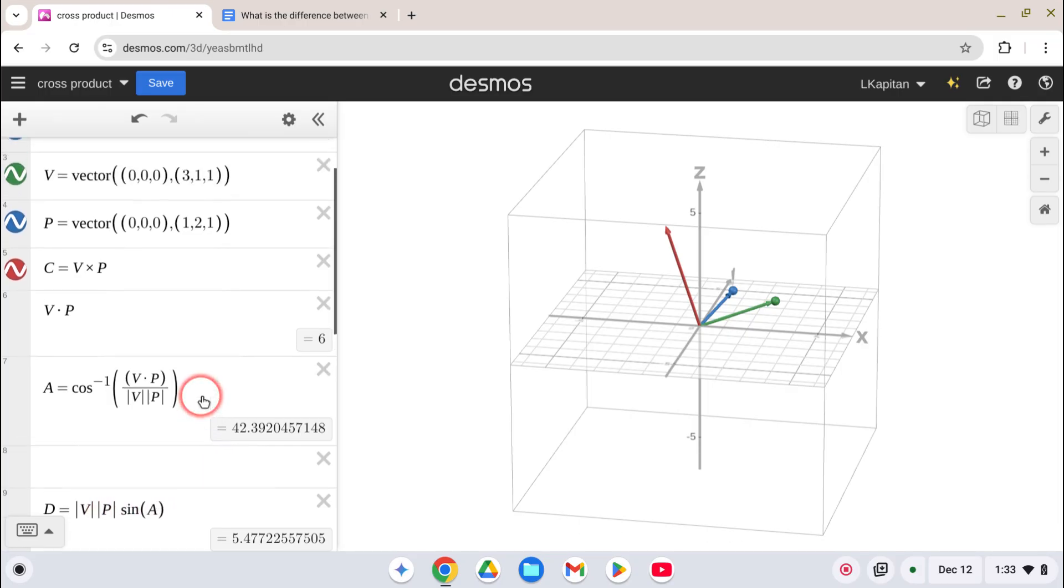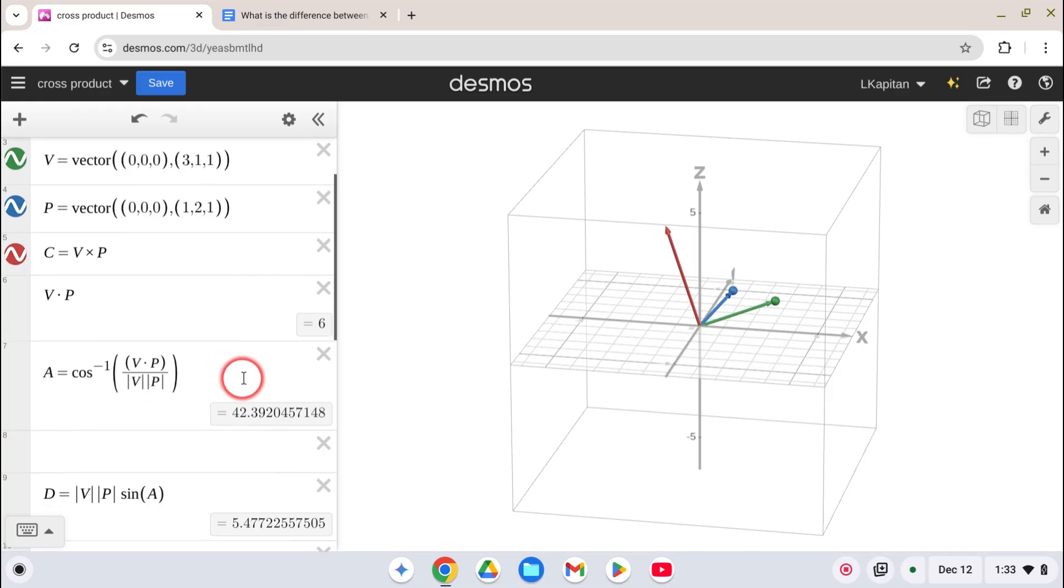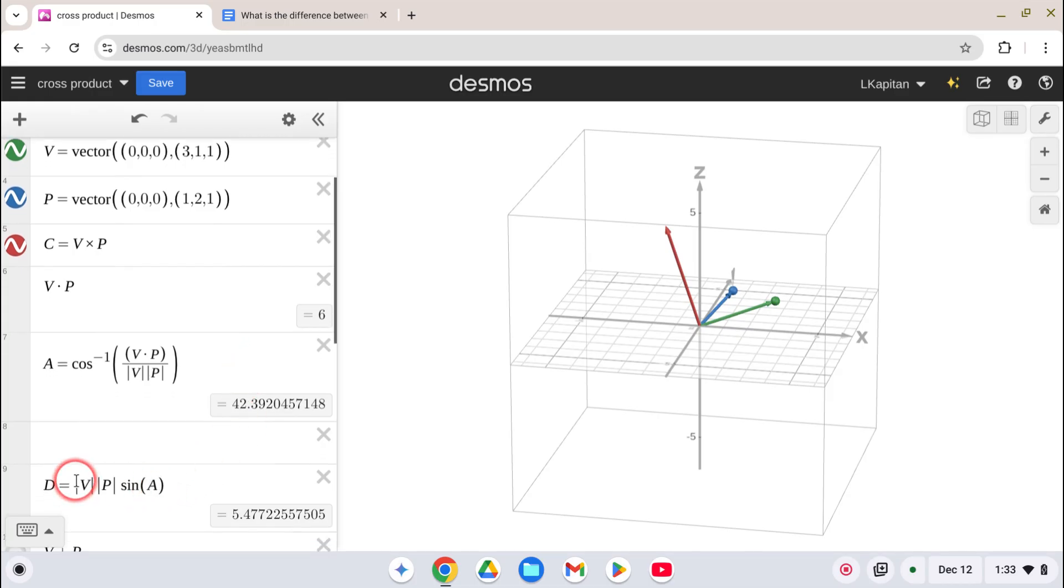To find the sine of the angle between them, I need to first do the dot product. So I got V dot P is 6, and the definition of this is V dot P equals the magnitude of V times the magnitude of P times the cosine of the angle between them. So I just solve for the angle, take the cosine of this over this, and I get 42.4. So now I can put that in this equation and solve for the magnitude of this vector, which is 5.47.